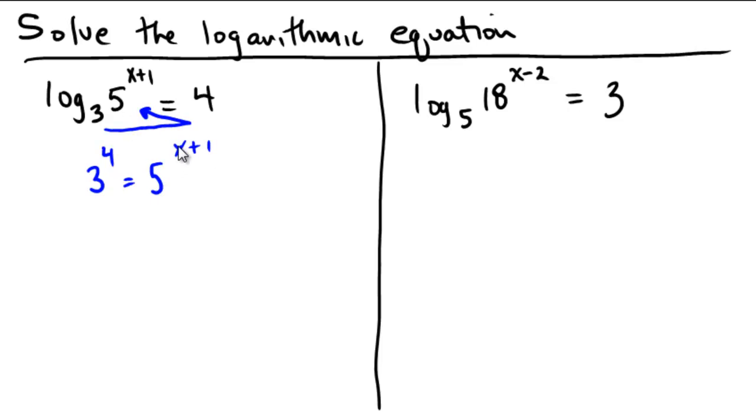So what I did there was the exponent. I'm going to change the logarithmic equation into an exponential equation using that upward arrow. So 3 to the fourth is 81, and we have 5 to the x plus 1.